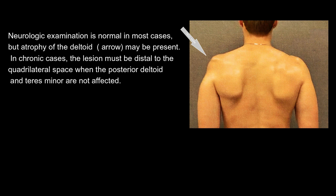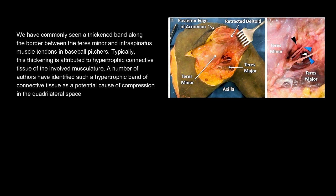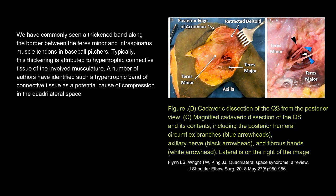Neurologic examination is normal in most cases, but atrophy of the deltoid may be present in chronic cases. The lesion must be distal to the quadrilateral space when the posterior deltoid and teres minor are not affected. A thickened band along the border between the teres minor and infraspinatus muscle tendons is commonly seen in baseball pitchers, attributed to hypertrophic connective tissue, which several authors have identified as a potential cause of compression in the quadrilateral space.